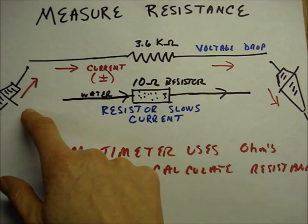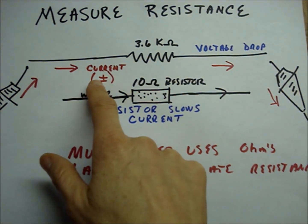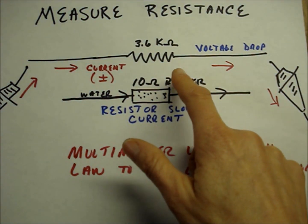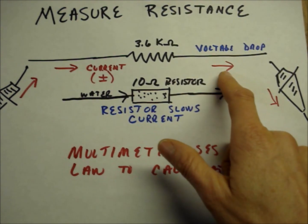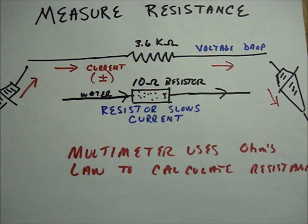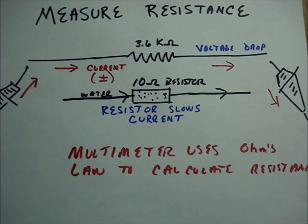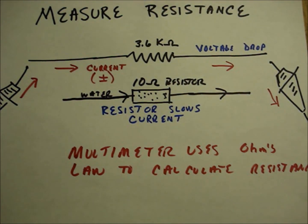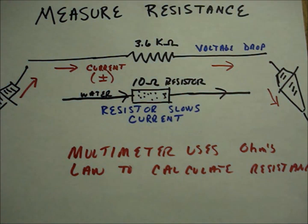The multimeter sends current through the wire and through the resistor, which slows down the current. That causes a voltage drop and the multimeter uses that voltage drop and Ohm's law to calculate the total resistance in the circuit.